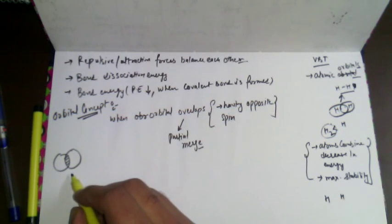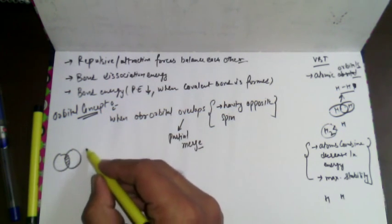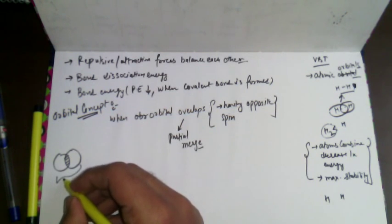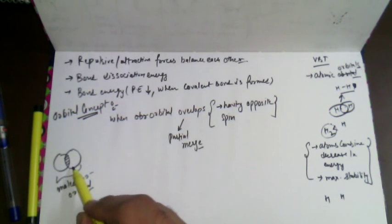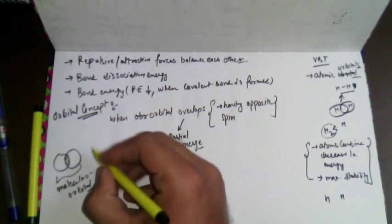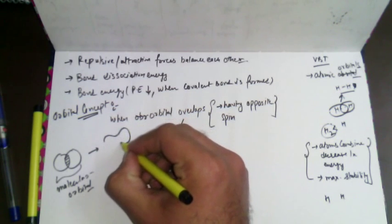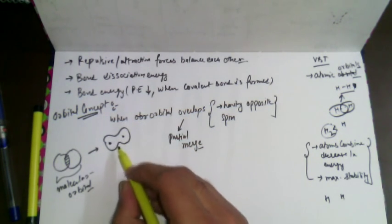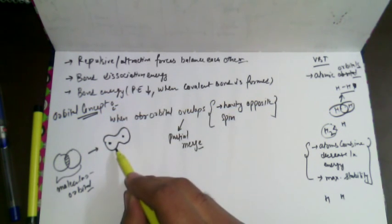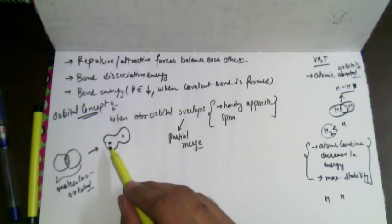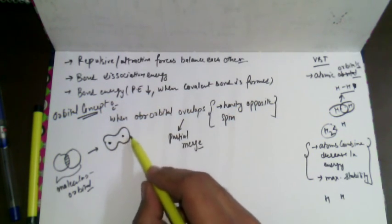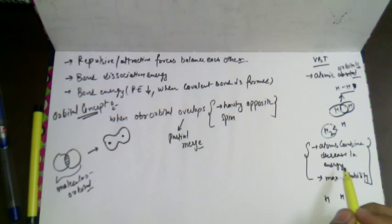A new orbital, known as a molecular orbital, is formed which surrounds the nuclei of both the combining atoms with their electron density. Remember these points: stability is maximum in the overlapping region, and energy is minimum. When this happens, we say a molecular orbital is formed.